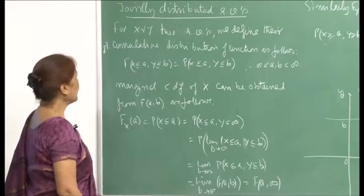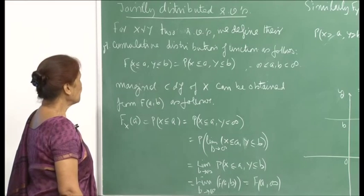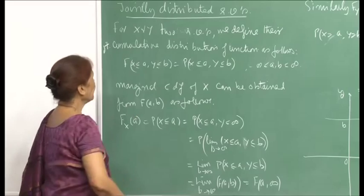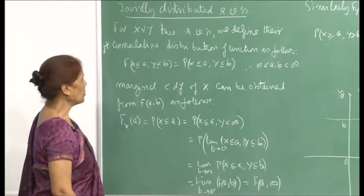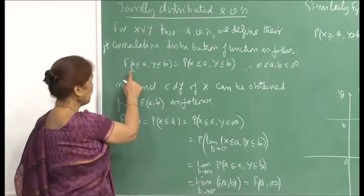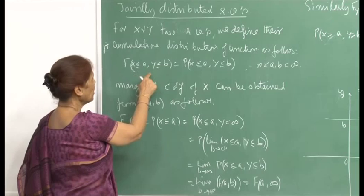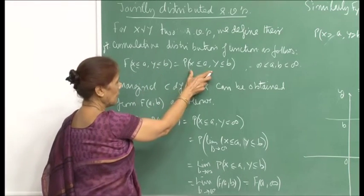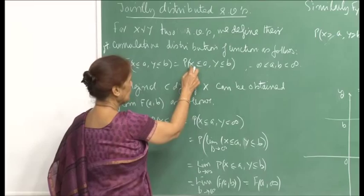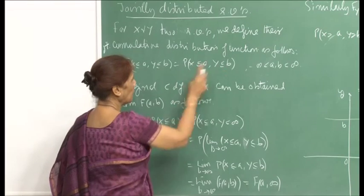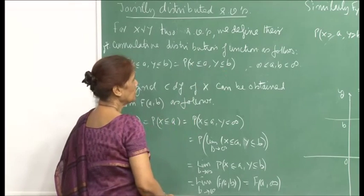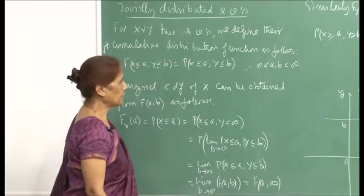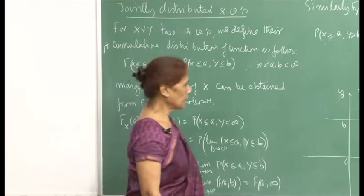If X and Y are two random variables, we define their joint cumulative distribution function as follows: F(a, b) = probability that X ≤ a and Y ≤ b, where a and b are two real numbers between minus infinity and infinity.